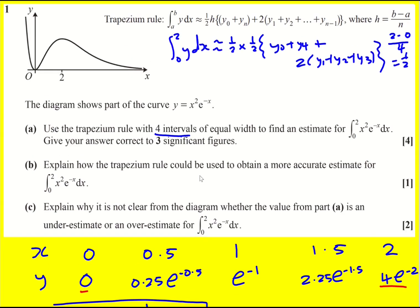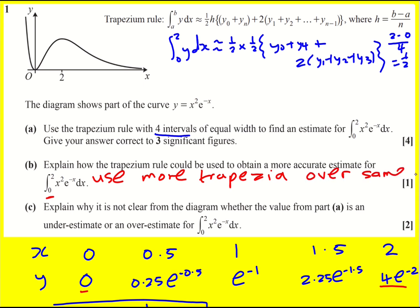The question asks how the trapezium rule could be used to obtain a more accurate estimate. Well, we could use more trapezia — over the same interval. The mark scheme does specify over the same interval, so something along those lines.